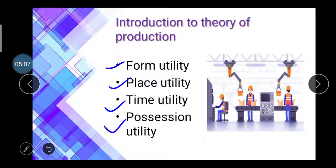Fourth is possession utility. Possession means transferring ownership to another person. In the production sector, they produce a product and sell it to a wholesaler or agent — transferring ownership from the owner to the agent. This is called possession or ownership transfer.